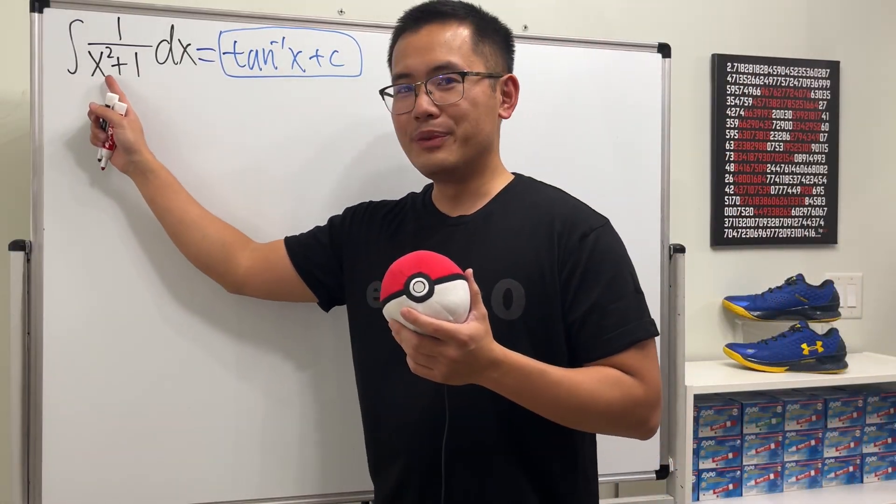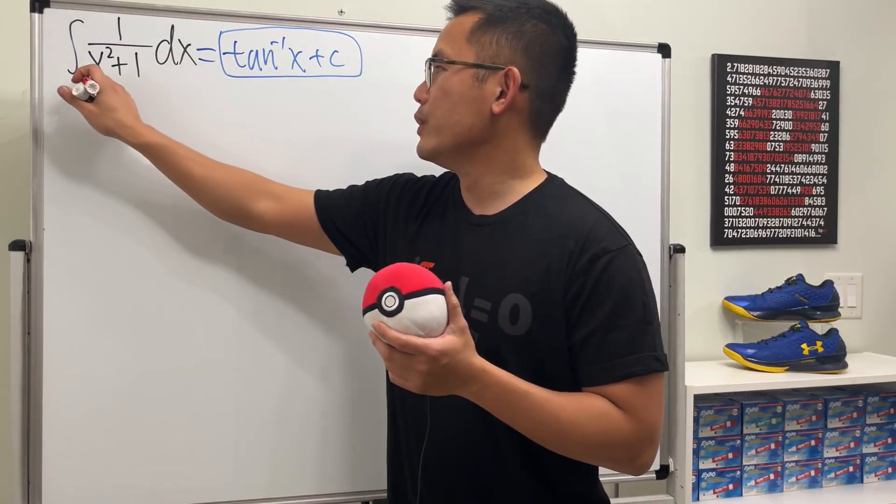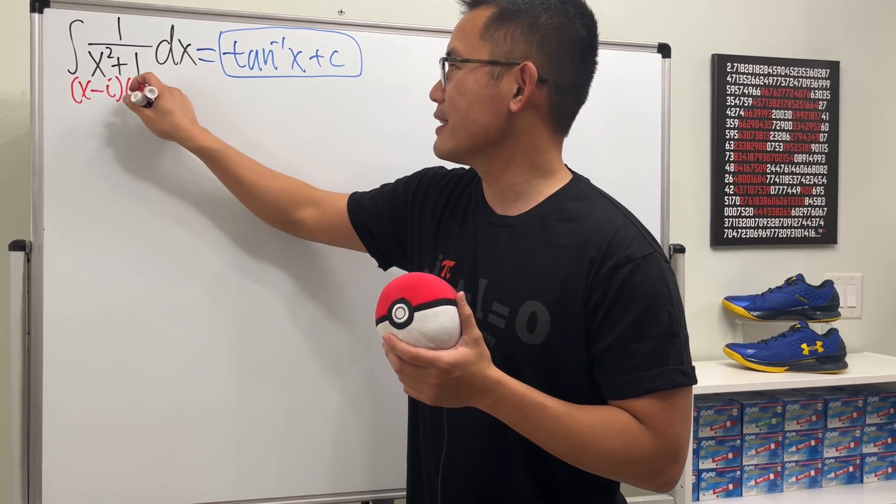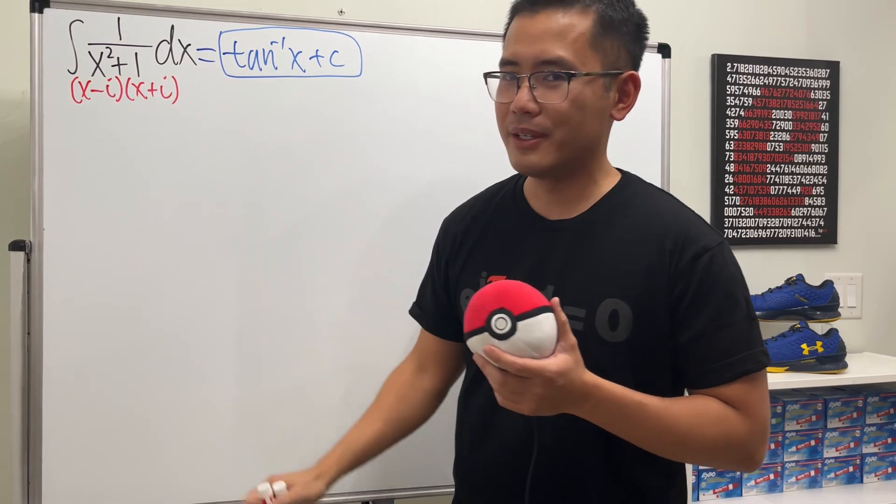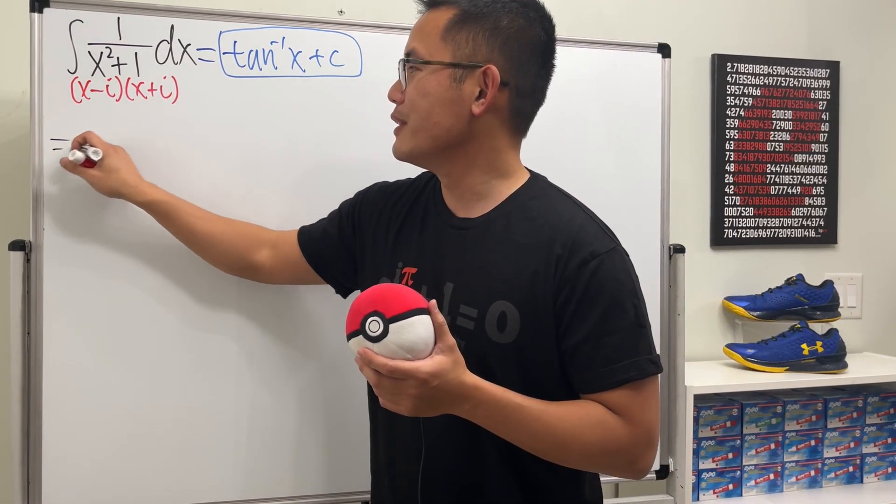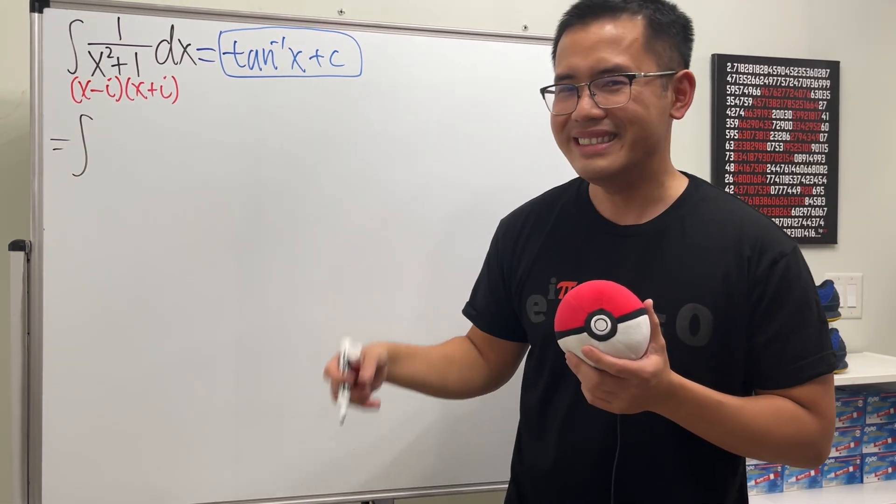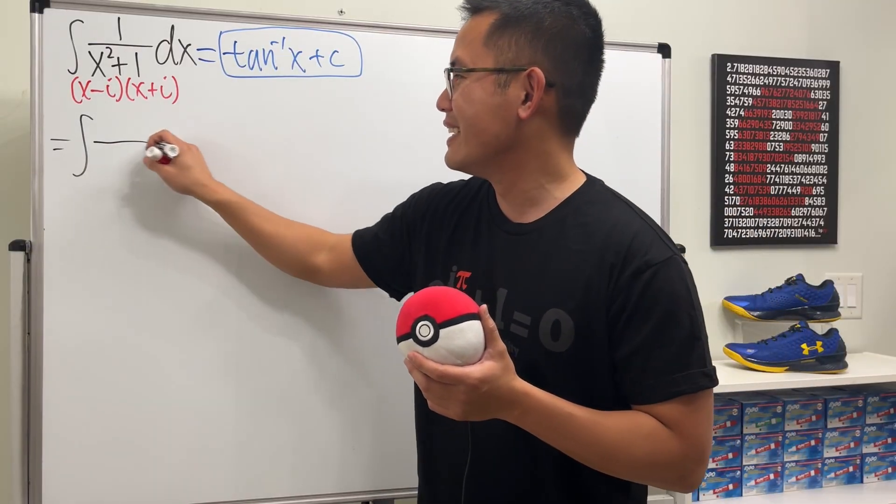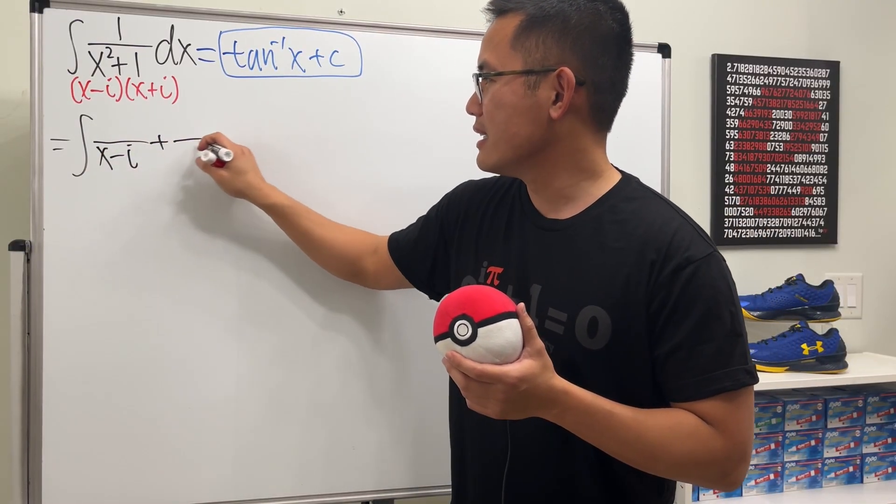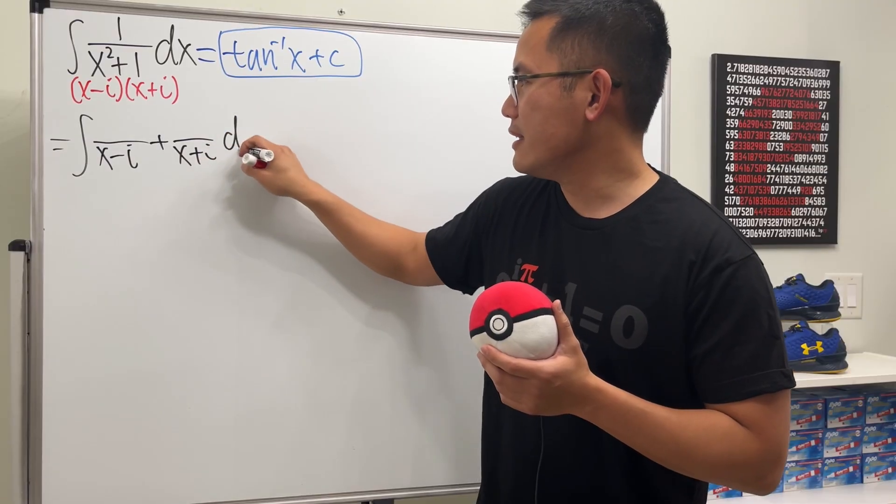No, of course not, because otherwise you guys are going to unsubscribe, right? So let's go ahead and see how to do this legitimately. Have a look on the bottom here. We have x squared plus 1. Let's factor it. We get x minus i times x plus i. This is legitimate. And then, it's also legitimate to do partial fractions, even with complex numbers. So here we have 1 over x minus i plus 1 over x plus i, and then dx.